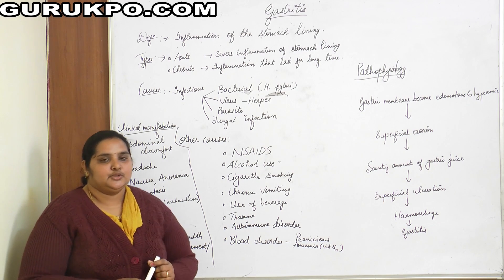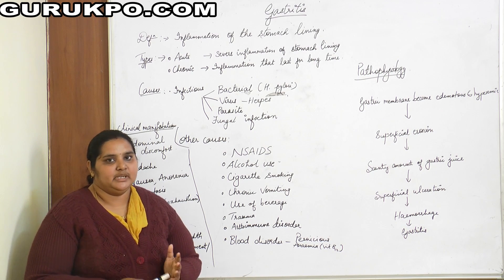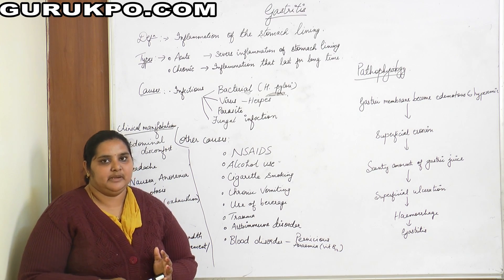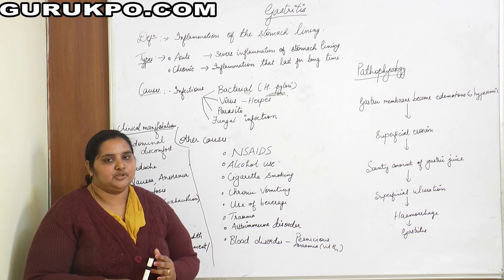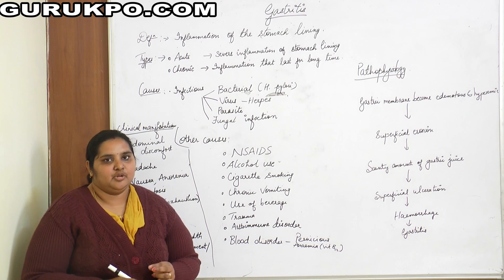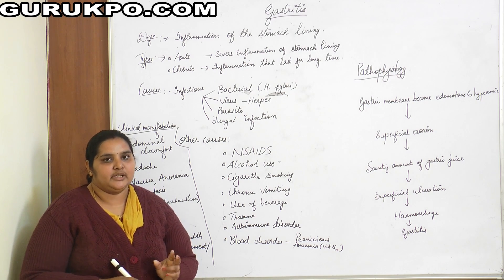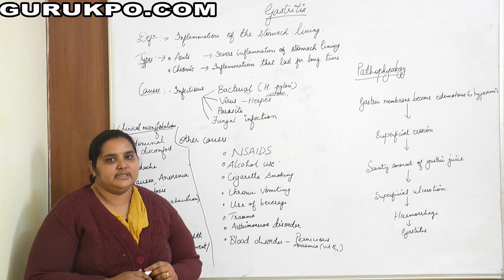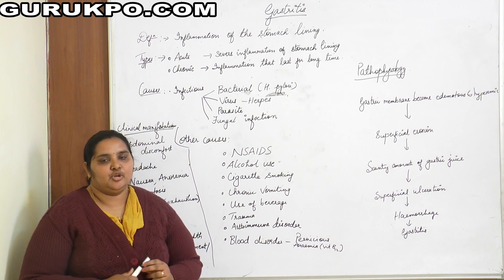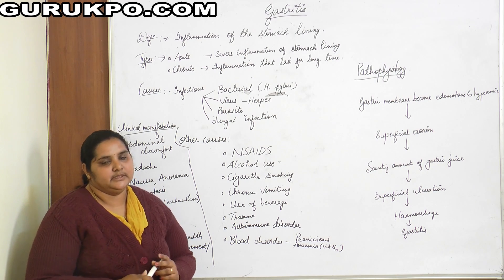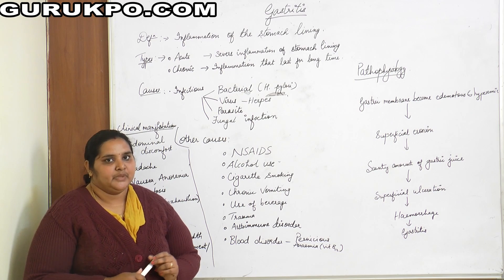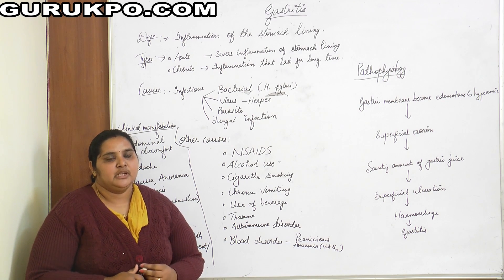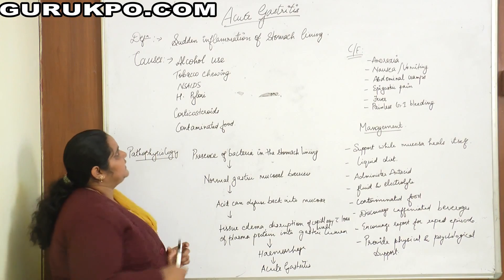Moving on to diagnosis. First, abdominal X-ray is used to assess how much the stomach lining is inflamed. Then endoscopy — an endoscope is inserted into the mouth to visualize the stomach lining and the extent of irritation. Biopsy is performed when there are ulcerations, bleeding, or masses, to determine whether there is cancerous growth. CT scan is also used to visualize the extent of stomach lining irritation.